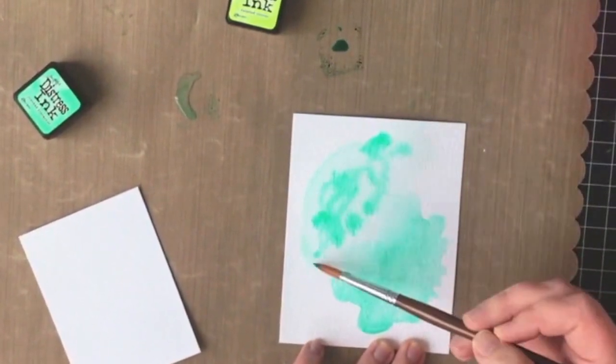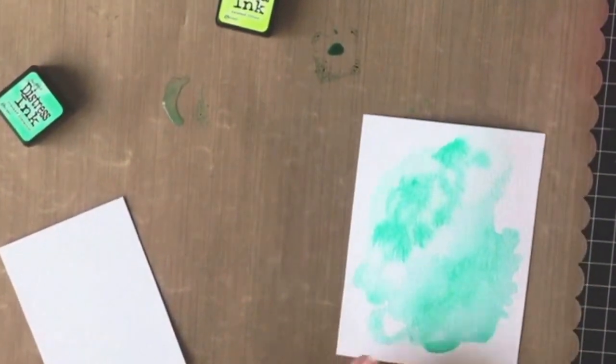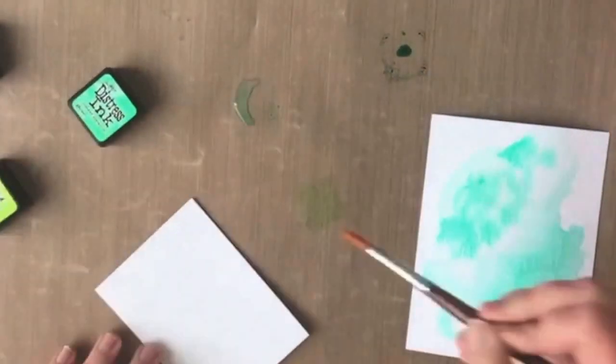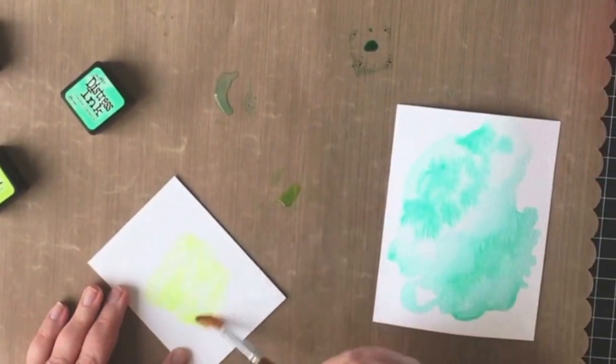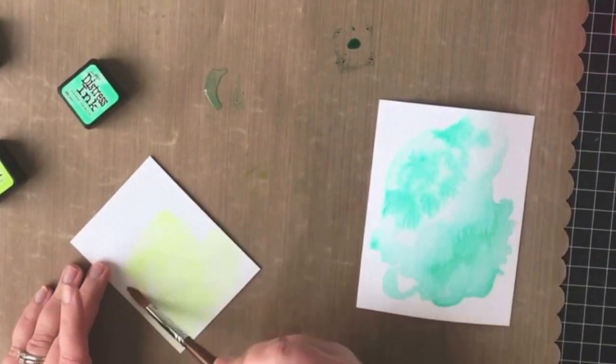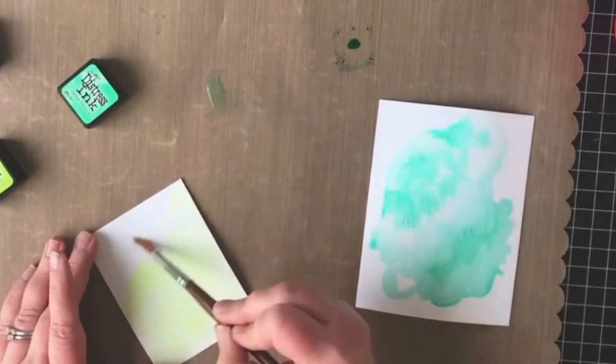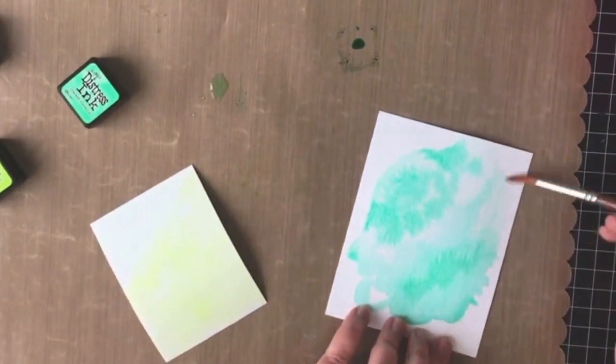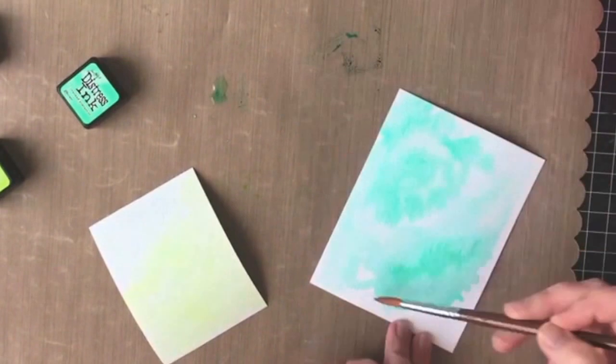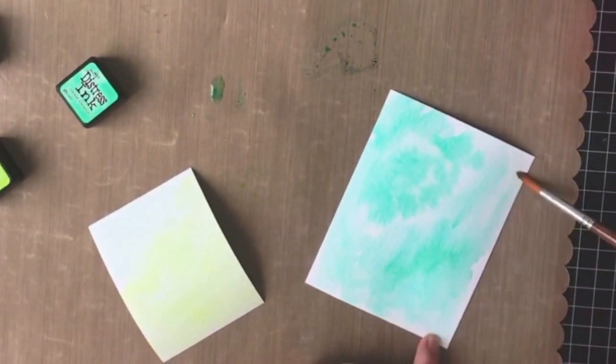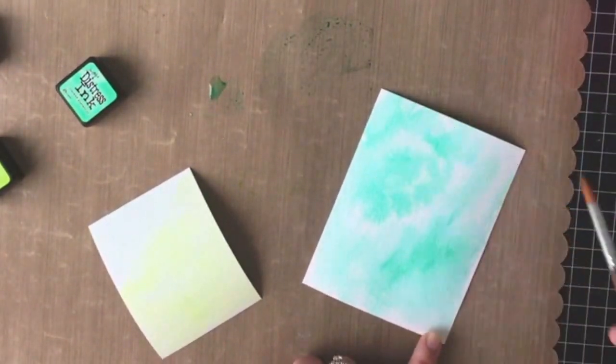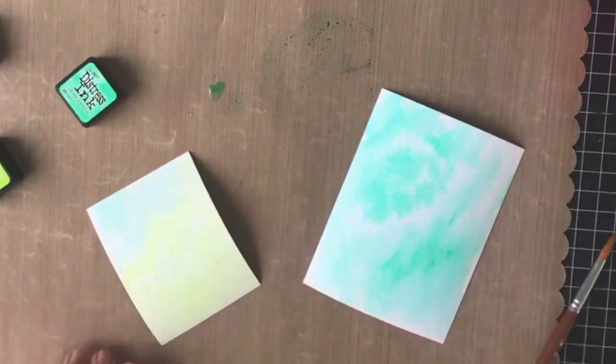I'm going to work back and forth between the two pieces of cardstock and what I'm really trying to do is just add an even if not a little bit splotchy base color and then I'm going to dry that and then come back in with a little bit more pigment so I get some more variation and interest in the watercolor panels.